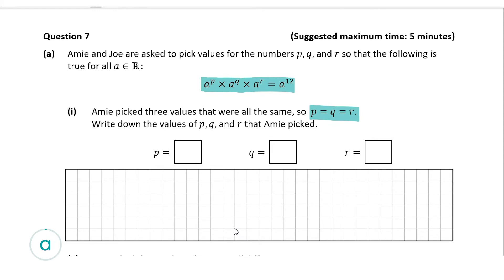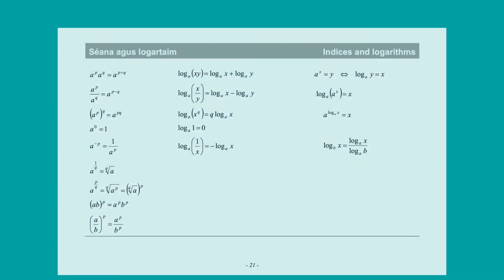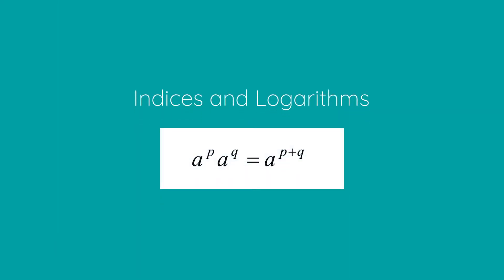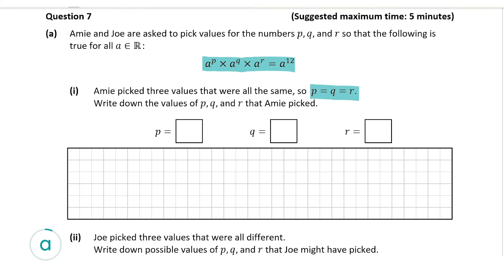For this question we're going to use an indices rule, which can be found in the log tables. Here on page 21 of the log tables we have the indices and logarithms rules. We're going to use the first one, which says that A to the power of P multiplied by A to the power of Q is equal to A to the power of P plus Q.